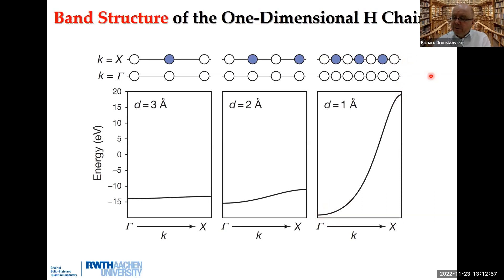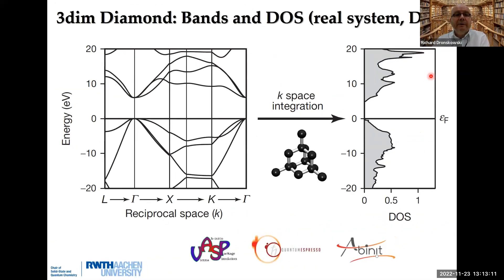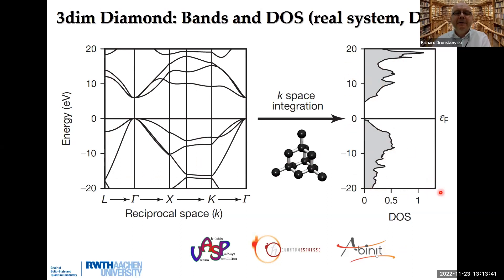If you can do this for one-dimensional systems, you can do two-dimensional and three-dimensional systems. You can do it not only qualitatively but quantitatively using density functional theory. Then you write the band structure of diamond, maybe run through VASP, Quantum ESPRESSO, ABINIT, or any other program typically used to calculate such materials. The bands go up and down in the valence and conduction parts, and then we do a simple k-space integration and arrive at the density of states.